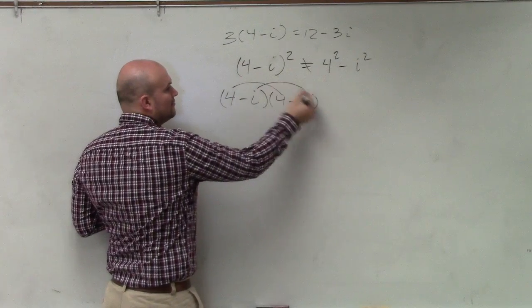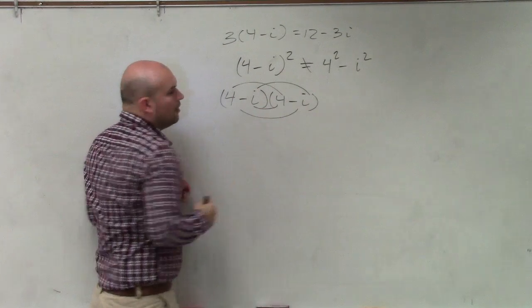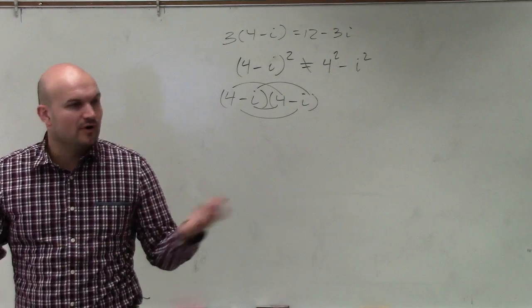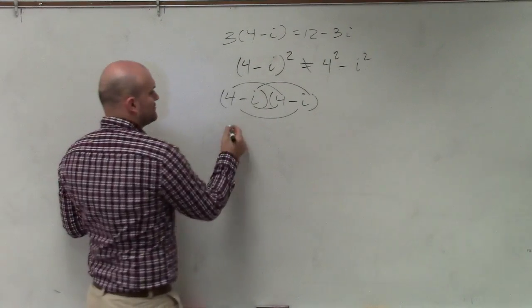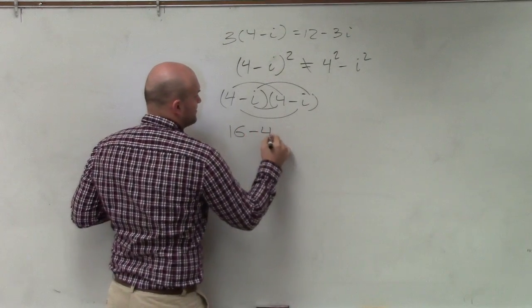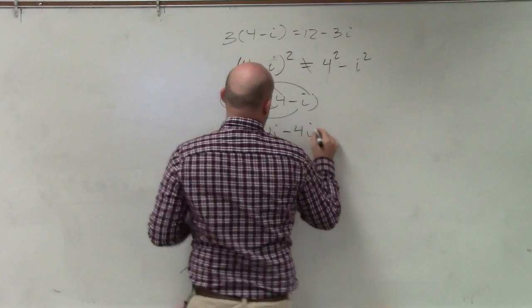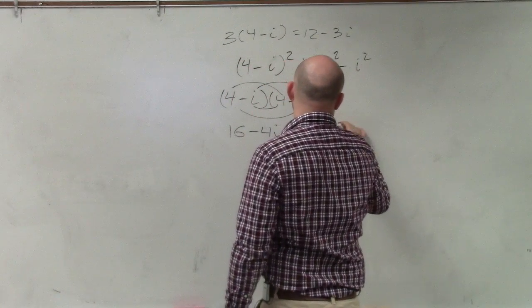So once you write it as a product, then you can just use the product FOIL, or you can use FOIL or use the box method, whatever really works for you. So I have 16 - 4i - 4i + i².